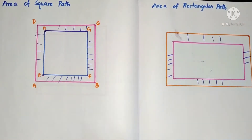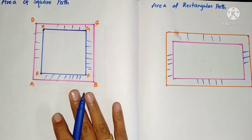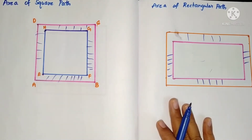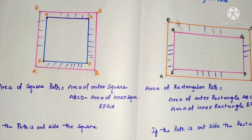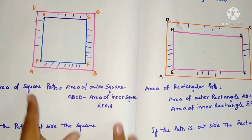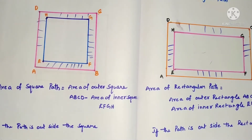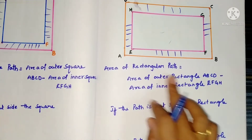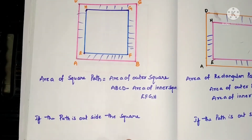So if the path is a square, the area of the path is area of outer square minus area of inner square. If it is a rectangle, area of outer rectangle minus area of inner rectangle. So: area of square path = area of outer square ABCD minus area of inner square EFGH. Area of rectangular path = area of outer rectangle ABCD minus area of inner rectangle EFGH. I think the concept of the path is very clear now.